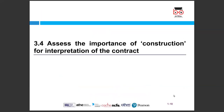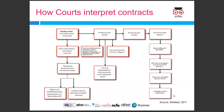Section 3.4 — assessing the importance of construction for interpretation of the contract. How courts interpret contracts: starting with the actual words, if the meaning is clear the court applies the ordinary and natural meaning against the background and commercial context, referring to established judicial interpretation. If there is a special technical or scientific meaning, or if the meaning is unclear, the court resolves doubt against the benefiting party. If it is still unclear, the court may apply terms that are reasonable and equitable, obvious or necessary, do not contradict express terms, and are capable of clear expression.